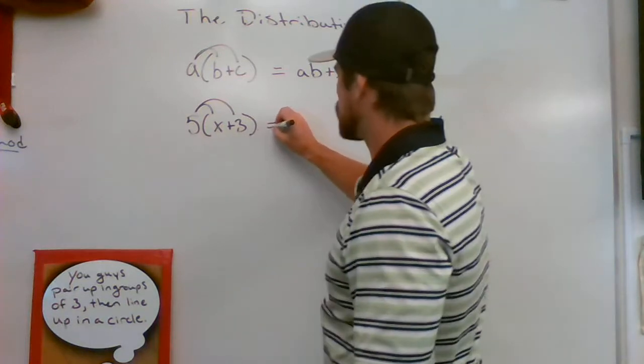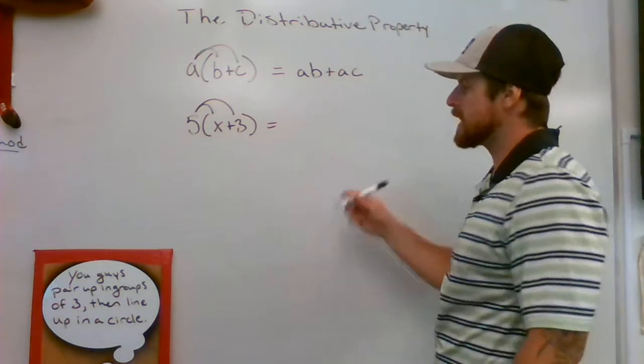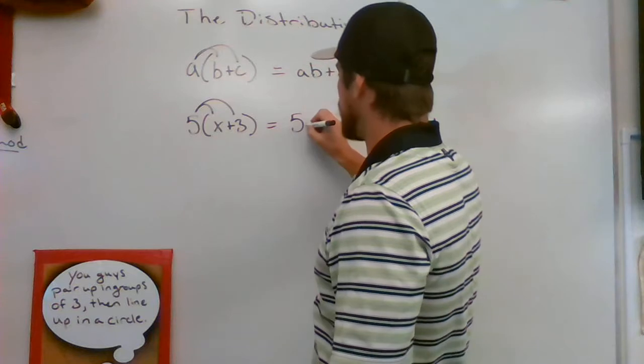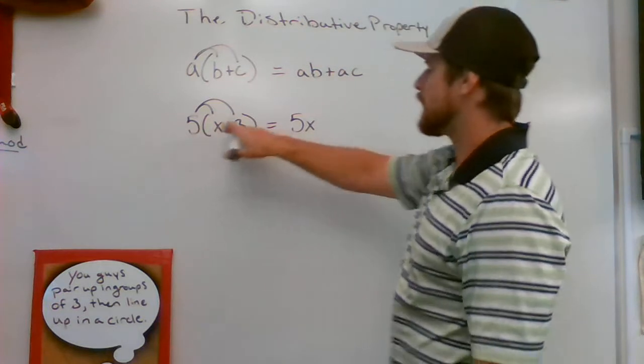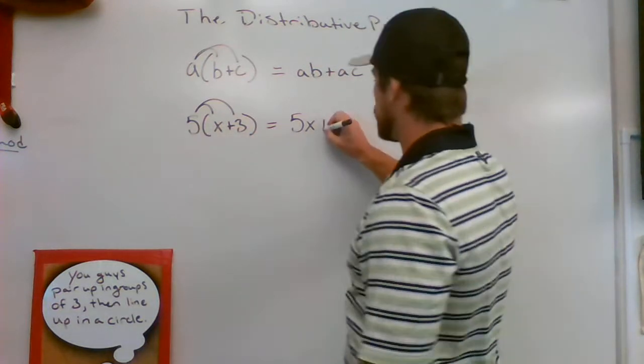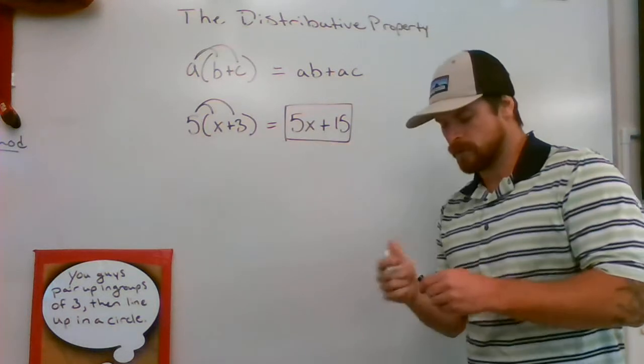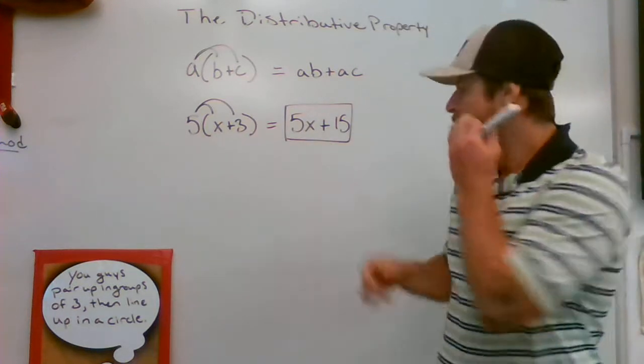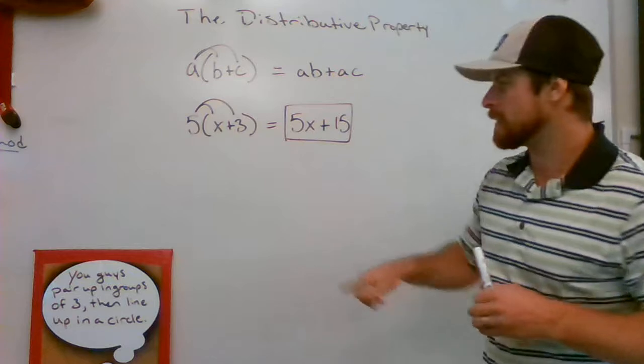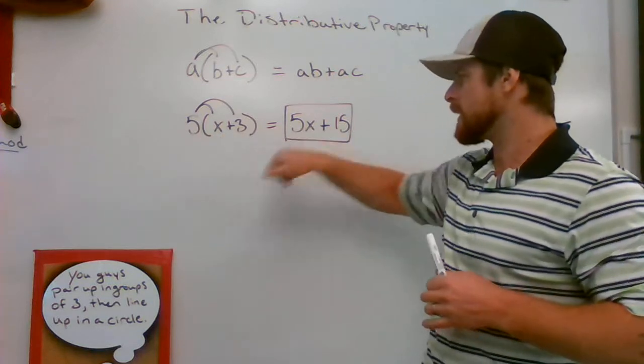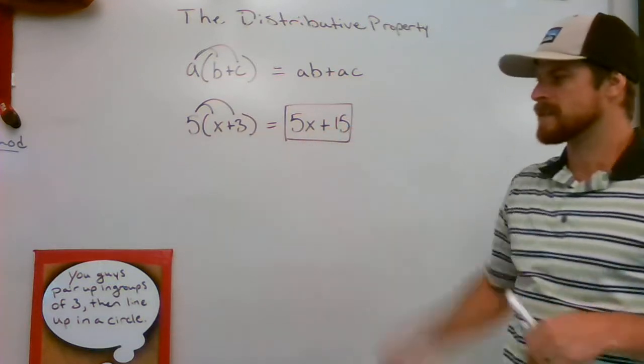So if I were to multiply five times X, I'm gonna be left with five X. If I'm gonna multiply five times three, I'm gonna be left with a 15. And this would be the most simplified example of the expression. Five X plus 15. Five times X makes five X. Five times three makes 15.